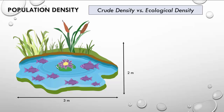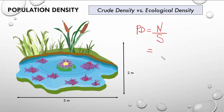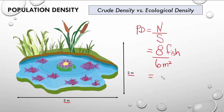Now we have a pond with a number of fish and we want to calculate population density. Population density equals the number of organisms divided by the area or volume. In this case we have eight fish in a pond that is three meters by two meters, so that's six meters squared. When we divide these we get an approximate population density of 1.3 fish per meter squared.